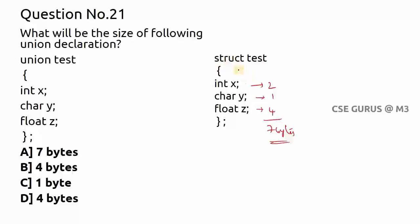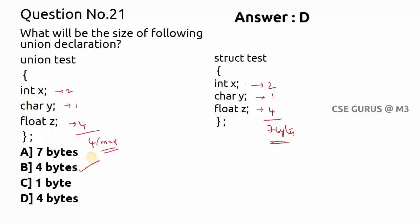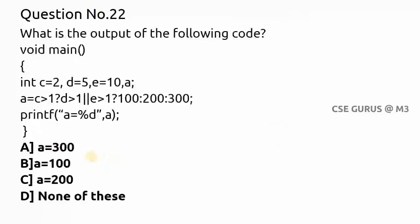When you declare it as a struct, the total size is the sum of all variables. But for a union, it considers the maximum size among all variables. Here, int is two, char is one, float is four — the maximum is four. So four bytes will be allocated when you declare it as a union. The answer is B.